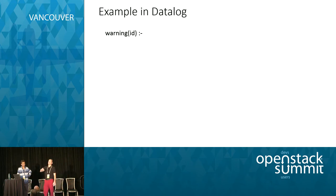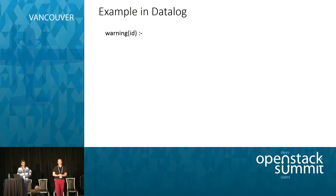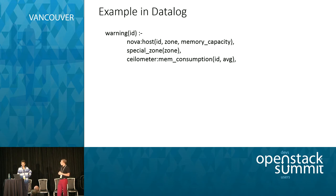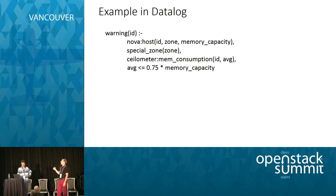The first statement was a soft constraint: you have to use at least 75% of your memory capacity. We use the keyword 'warning' — warning means soft constraint, error means hard constraint. A particular ID — think of this as a UUID — is a warning if: Nova tells us this ID corresponds to a host, a physical machine; we also find out the zone and the memory capacity for this machine; we only want the policy to apply to particular zones; then we ask Ceilometer for the memory utilization for this particular ID, which we call AVG. The test is that the memory utilization AVG is less than 75% of the capacity — a pretty straightforward translation of the English into machine-understandable language.